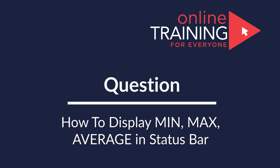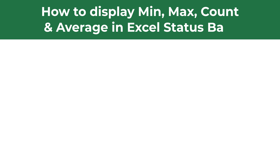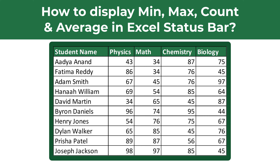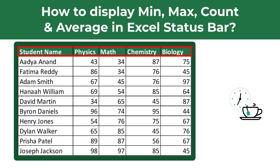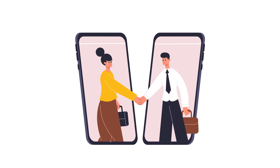Very frequently on the test you get a question about usage of formulas in Excel, and sometimes you get a question on how to display data in the status bar. For example, let's look at the question: how to display minimum, maximum, count, and average in the Excel status bar. You are presented with a data set of student grades showing student names and their grades in physics, math, chemistry, and biology. Give yourself a little bit of time to come up with the solution.